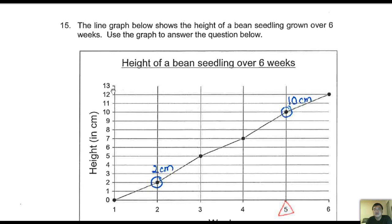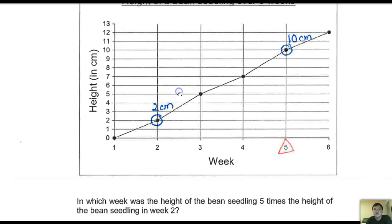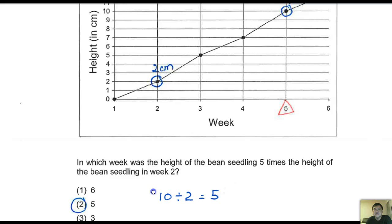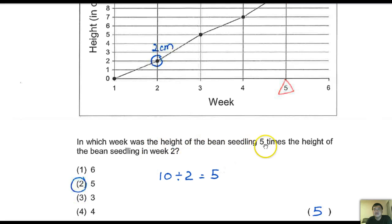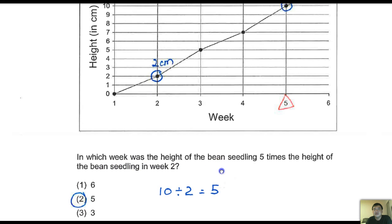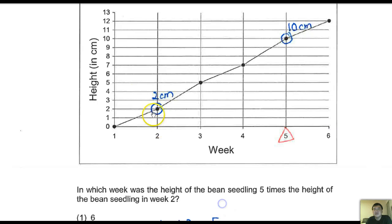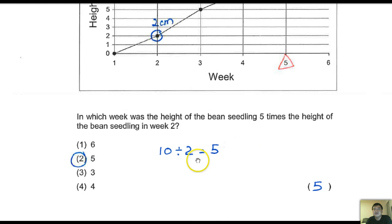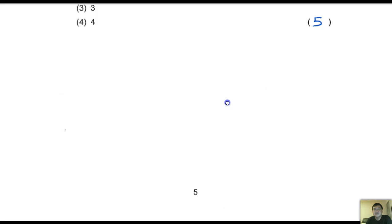Then we take a look. In which week was the height of the bean seedling 5 times the height of the bean seedling in week 2? Five times - week 2 is 2 cm. 5 times is 10 cm. So which week is 10 cm? It's found over here that week 5 is 10 cm. So you take out this one. Sorry, this is not 5, this is 2. Write down the answer, 2 over here.